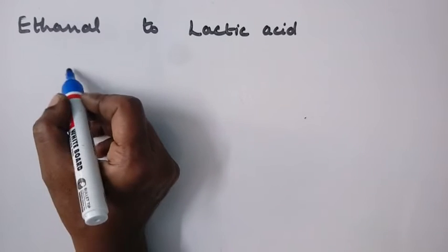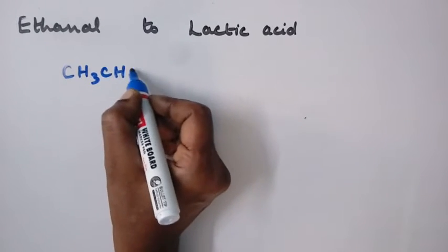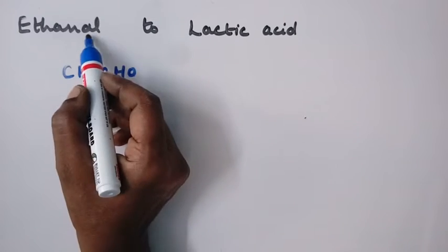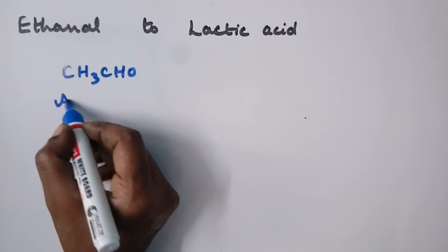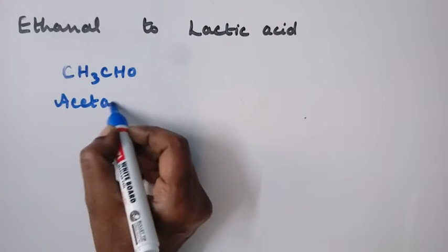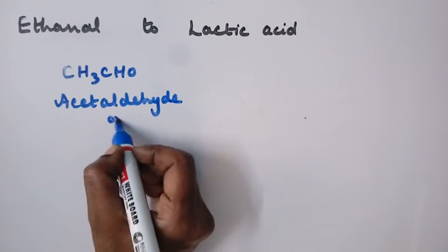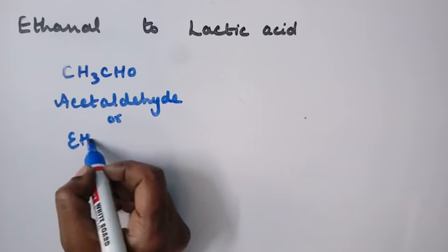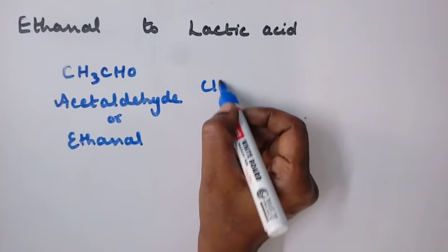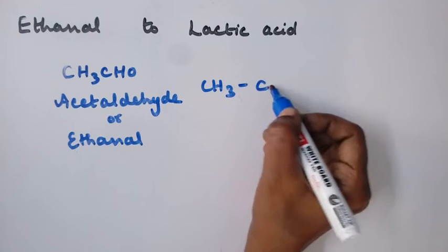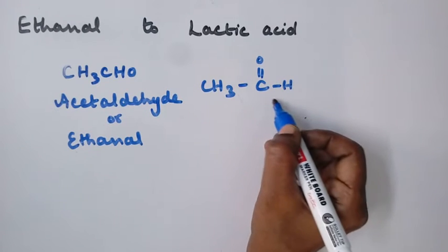Ethanol to lactic acid. Ethanol is CH3CHO, it's an aldehyde. Its common name is acetaldehyde or the IUPAC name is ethanol. This ethanol we can write like this: CH3C double bond O hydrogen.